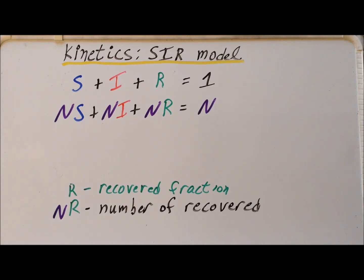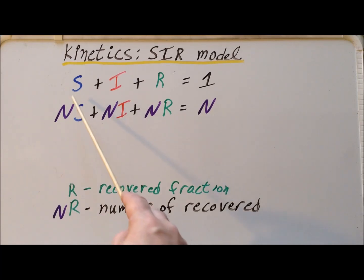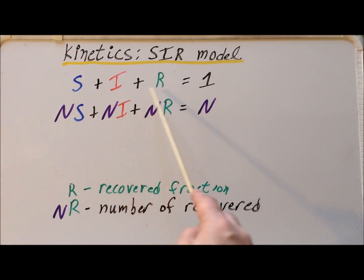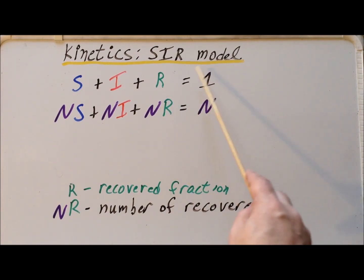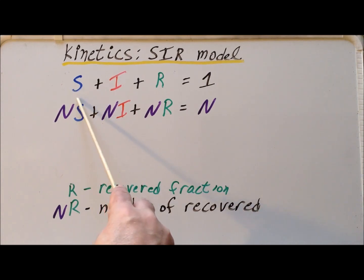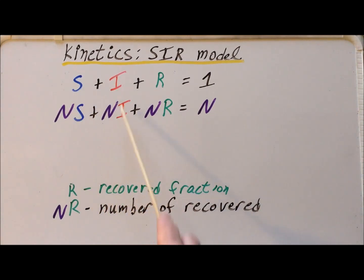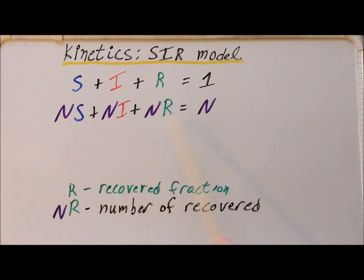In this model, a person is either susceptible, or infected, or recovered, but is not simultaneously in two or more classes at the same time. So therefore, if we add up the fraction susceptible plus the fraction infected plus the recovered fraction, this will include all the individuals, and the fractions have to total to one. Likewise, NS is the number of susceptible individuals, NI is the number infected, and NR is the number recovered. If we add those together, we get the entire population N.